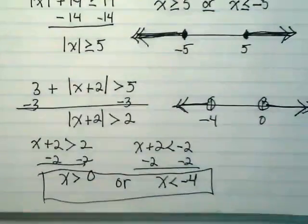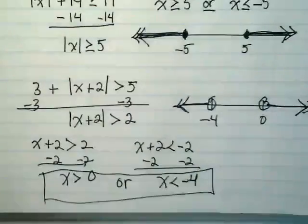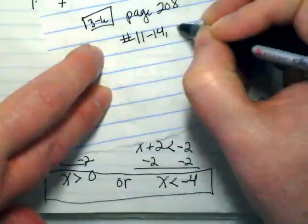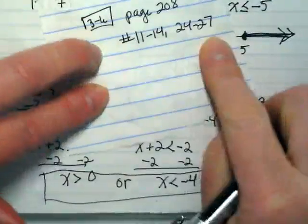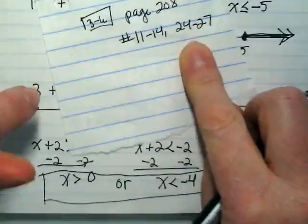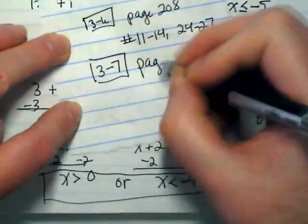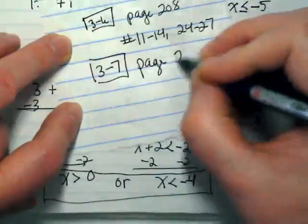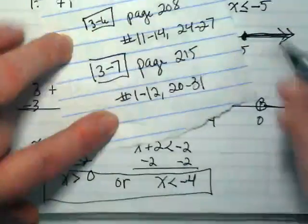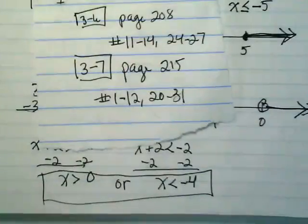So we have a few problems to do out of 3-6, and that's on page 208. I'll write it down so you guys can see this. Page 208, numbers 11 to 14, 24 to 27. These are eight problems where you are creating an inequality from a graph, like we practiced at the very beginning. And then we're going to do some 3-7 work that we can check tomorrow, and it's going to put us in good shape to take the test on Tuesday. This is on page 215, numbers 1 through 12, 20 to 31. It is quite a few problems because this is something you really need practice to be solid with.